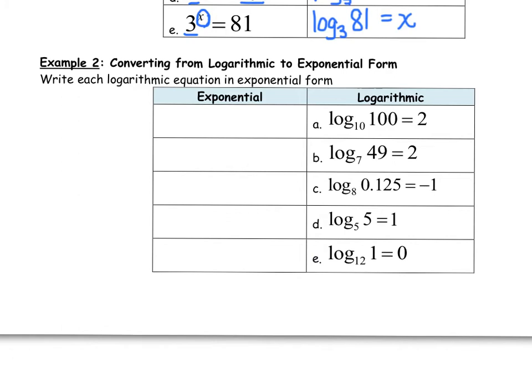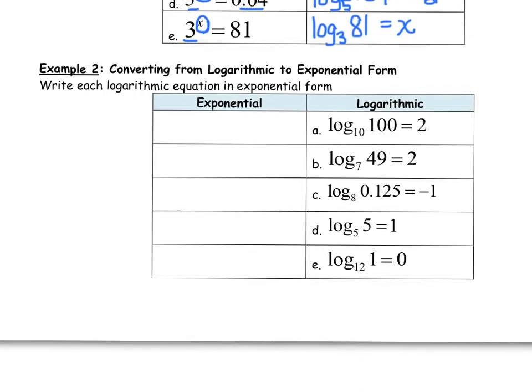Alright, now we'll go back the other way. So if you draw the little swoopy arrow, it'll be really easy to go backwards, or you're welcome to label each piece. You could label the base is b, the 100 is the answer, and the 2 is the exponent. In other words, 10 to the second power equals 100.